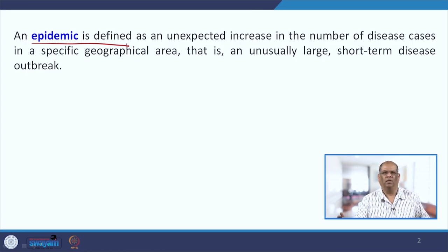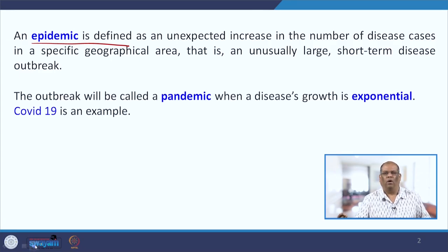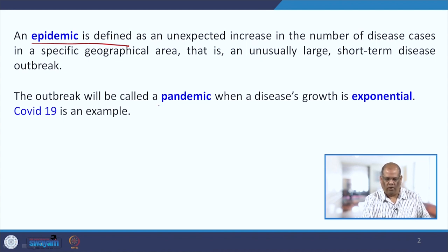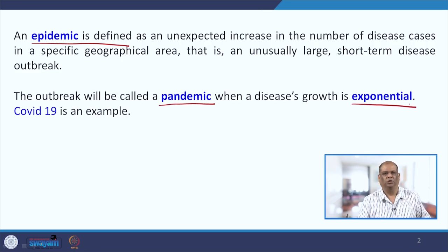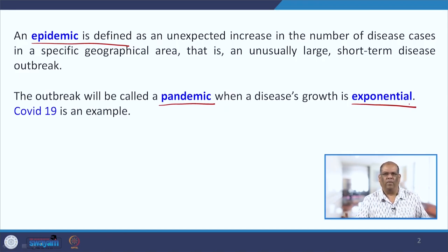For example, COVID-19 is an epidemic. However, we generally use the word pandemic. The difference is that an outbreak is called a pandemic when the disease growth is exponential — very, very high and very fast. As we have seen with COVID-19, the infectious rate was catching up exponentially, which is why we use the word pandemic for COVID-19.